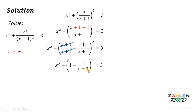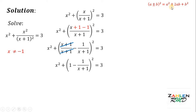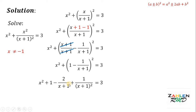Next, we're going to expand 1 minus 1 over x plus 1, quantity squared. Take note that if we have a plus or minus b, quantity squared, it equals a squared plus or minus 2ab plus b squared. In our given, a equals 1 and b equals 1 over x plus 1. Therefore, we have 1 minus 2 over x plus 1 plus 1 over x plus 1 quantity squared. Bring down x squared and bring down 3.